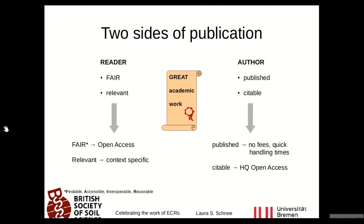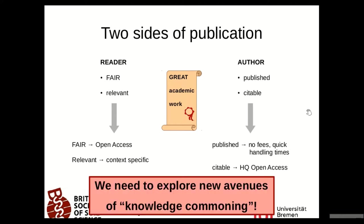As an author, first and foremost we want to be published — and not only that, but citable. That means we rely on journals with no fees for authors, reasonable handling times — particularly as PhD students who rely on quicker publication — and in order to be citable, we want to be published in high-quality journals to build a reputation. These different interests are not always easy to reconcile, which is why it may be time to explore new avenues of what I'd rather call the knowledge commoning, because what we produce is knowledge that in the best case should be available to the public as a common good.